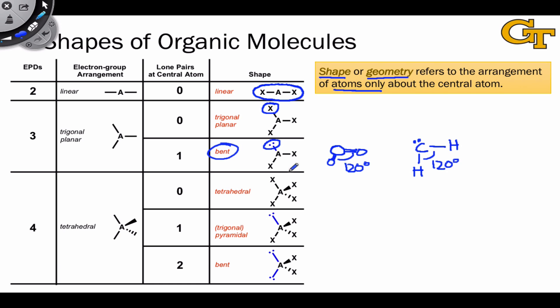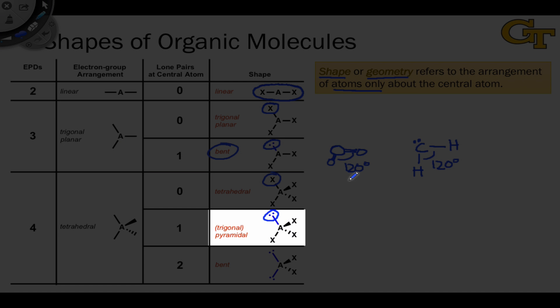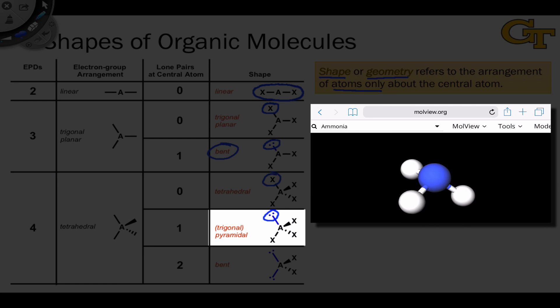The tetrahedral geometry presents the same issue. We could have a situation where all four electron pair domains are associated with bonds, like CH4 or silicon tetrafluoride. But we can also take one of those X atoms and replace it with a lone pair. The result would be what's called a trigonal pyramidal geometry. An example is ammonia, which has a central nitrogen atom with a single lone pair and three bonds to hydrogens.